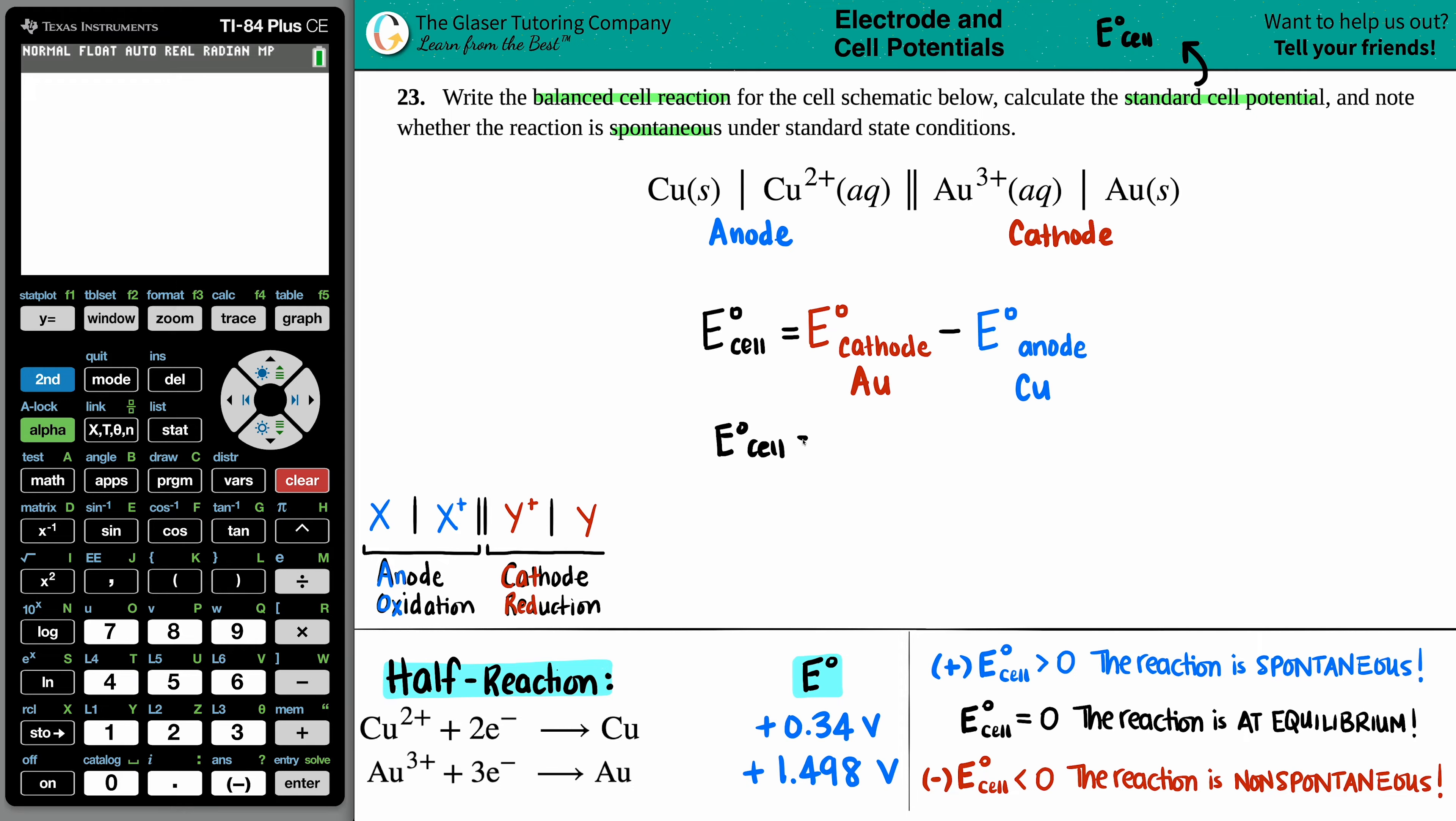We have E cell equals the cathode, which is the Au, 1.498. And I'm going to minus the anode, which is the 0.34. E cell equals 1.498 minus 0.34. Not 0.31. And these numbers look good. Since my anode was only to the hundredths place, technically my answer should only be to the hundredths place. If we were doing sig figs, 1.16 volts.